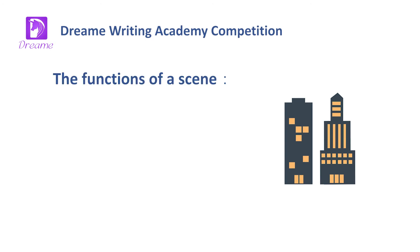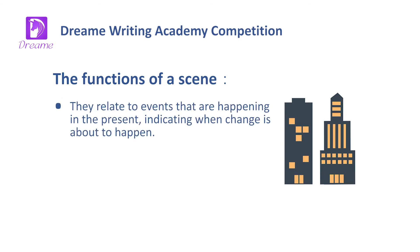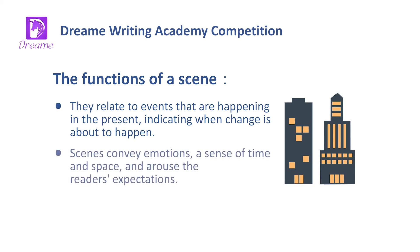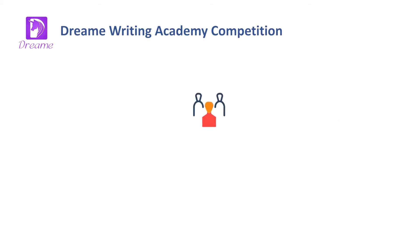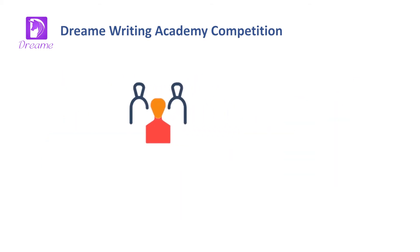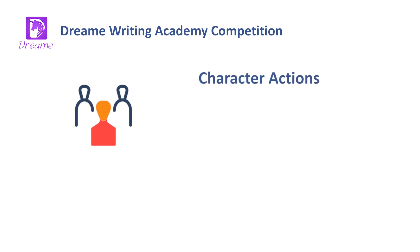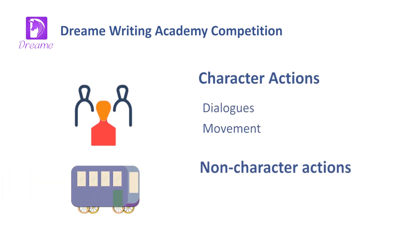Let's see how secondary plots work through these three words. In a word, scenes are the primary writing tool in a writer's toolbox. The functions of a scene are: they relate to events happening in the present, indicating when change is about to happen; they convey emotions, a sense of time and space, and arouse the reader's expectations.